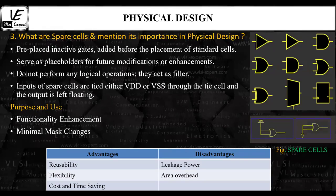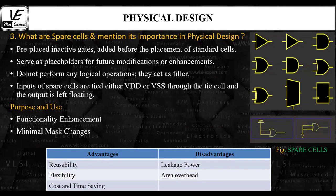What are spare cells and what is their purpose in the physical design process? Spare cells play a crucial role in physical design by providing flexibility and ease of functional enhancement relative to the fabrication process. They are pre-placed inactive gates that are added before the placement of standard cells, serving as placeholders for future modifications or design enhancements.